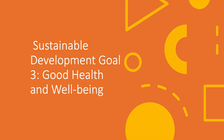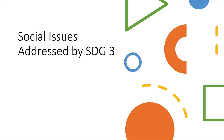Social Issues Addressed by SDG 3. SDG 3 aims to address several social issues related to health and well-being. These include reducing maternal and child mortality, combating communicable diseases, ensuring access to healthcare services, promoting mental health, and addressing the impact of environmental factors on health.